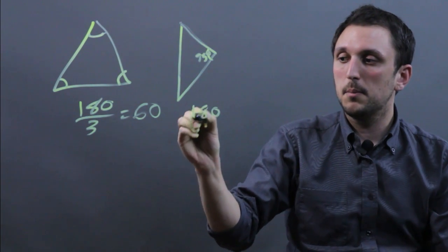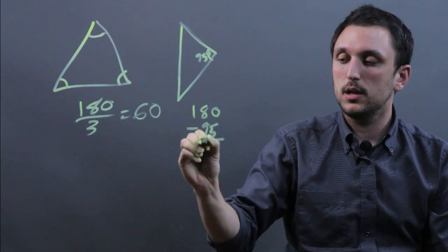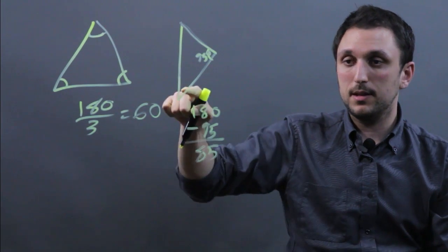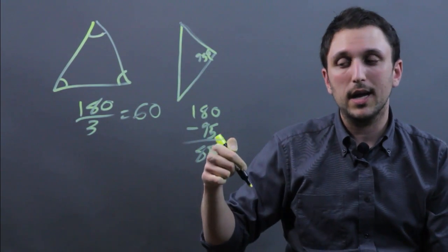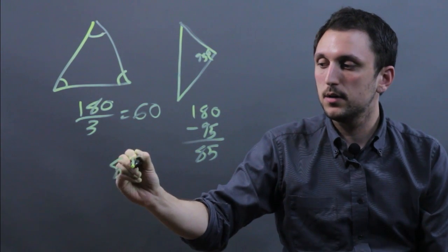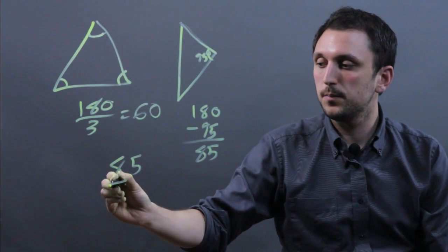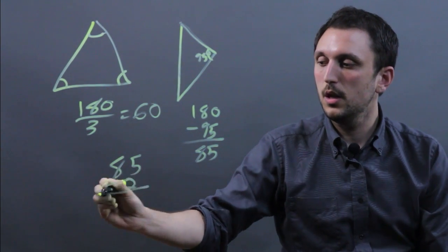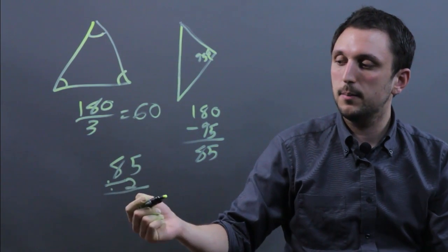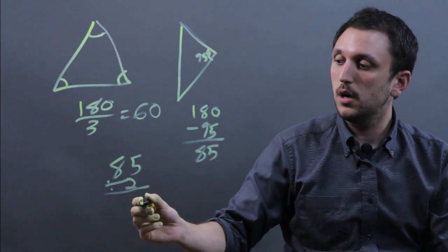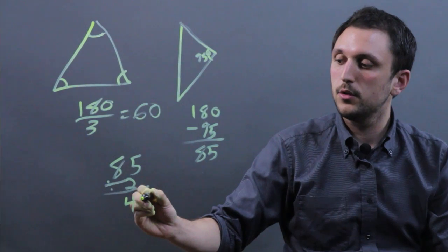So 180 minus 95 equals 85. That means this plus this have to equal 85. So we take 85 and we divide by 2 and we get 85 divided by 2 is 42.5.